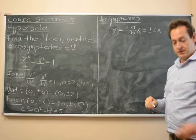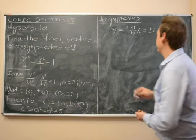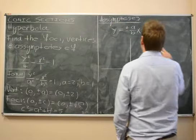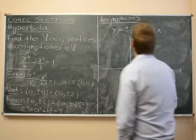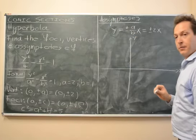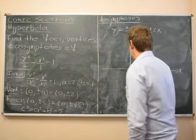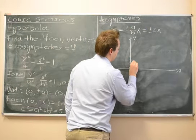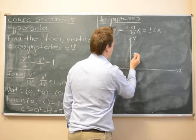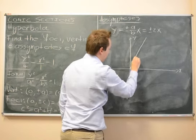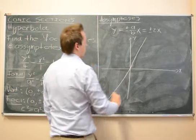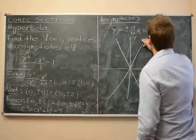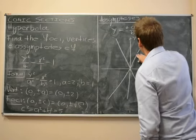So now let's sketch this hyperbola. Let's first draw in the asymptotes, y is plus or minus 2x.